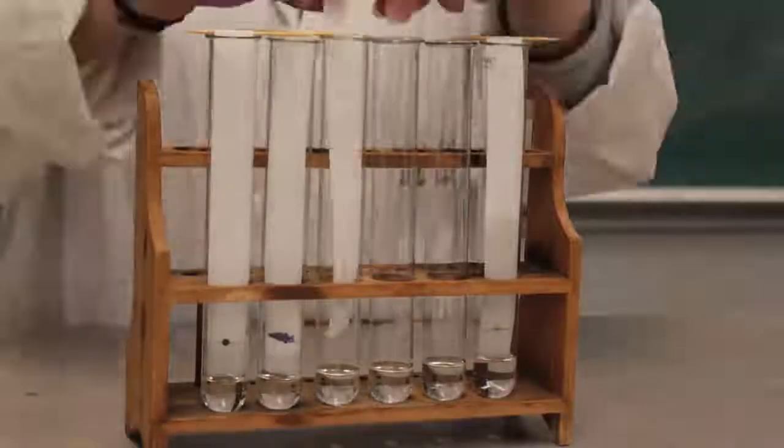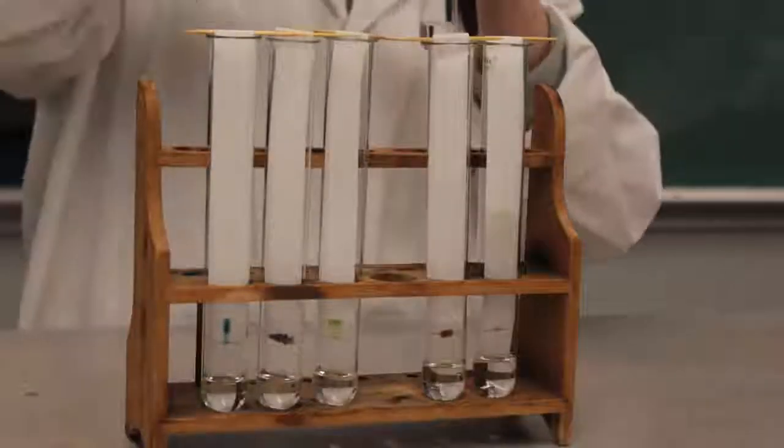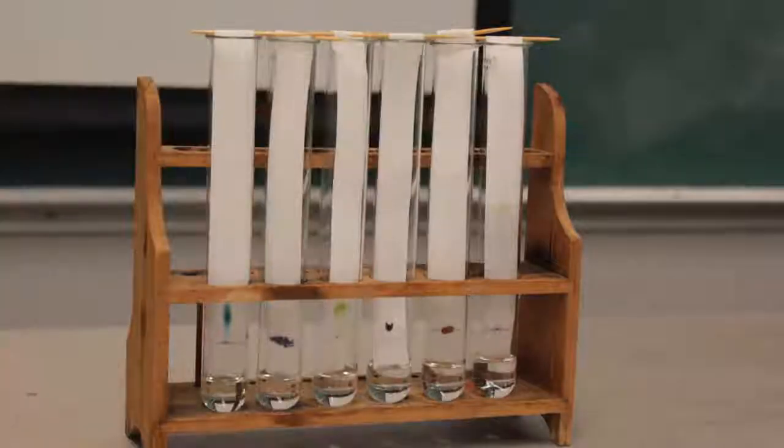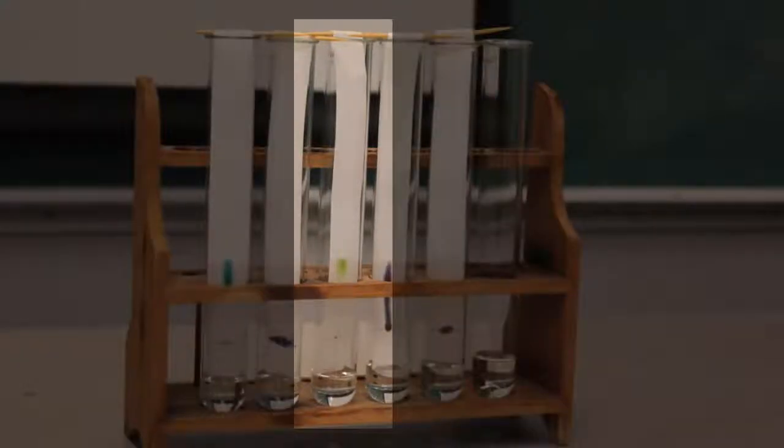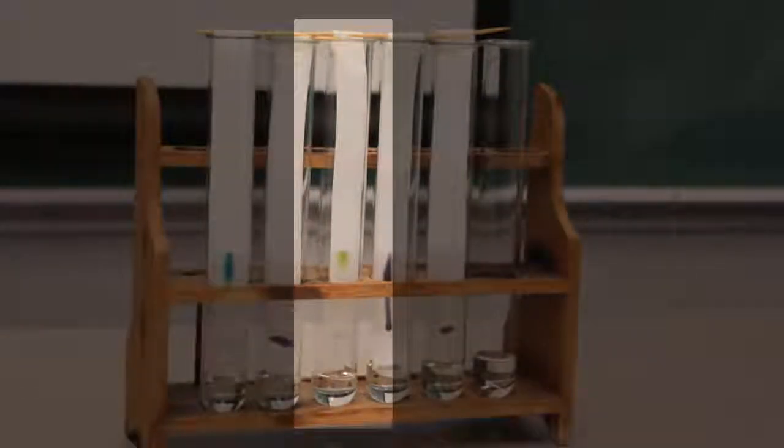Once your test tubes are ready, insert the filter paper strips so the bottom is just touching the acetone solution. The acetone will wick up the paper using capillary action and carry the pigment as it moves up the filter paper. Here we tried many different samples. You can see the leaf pigment in the center, highlighted.